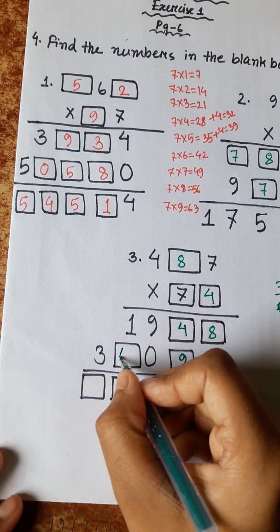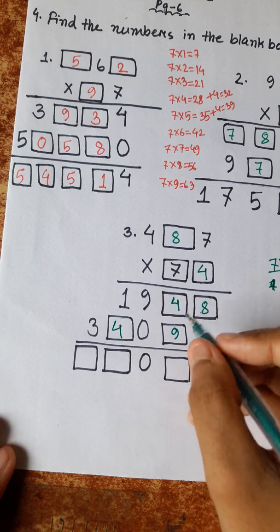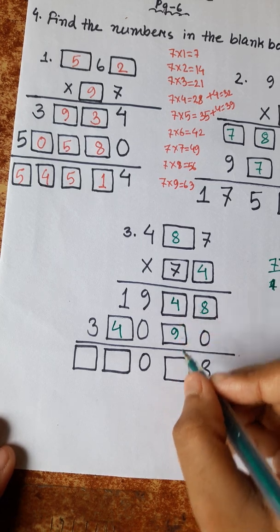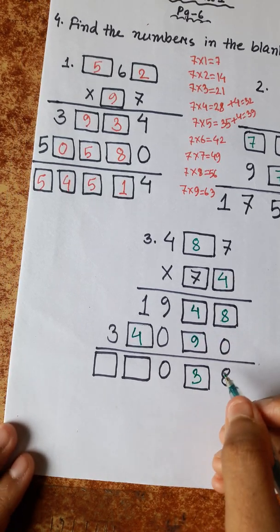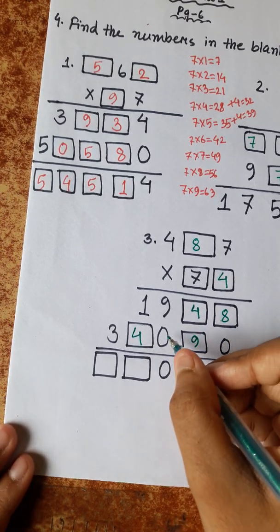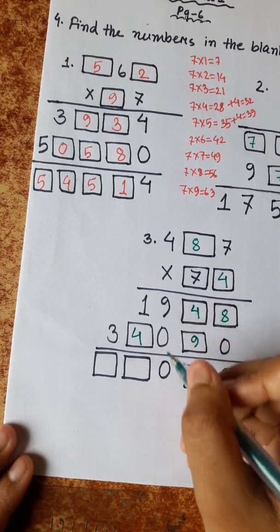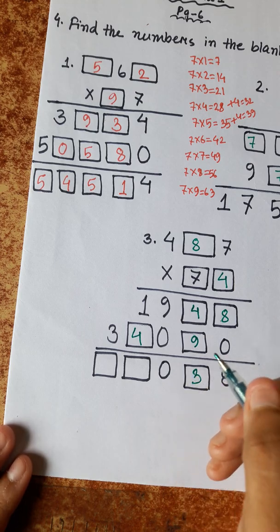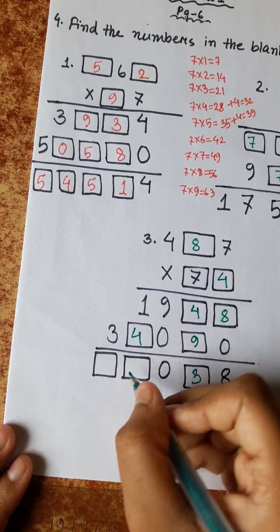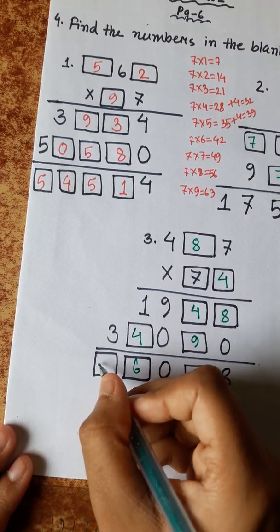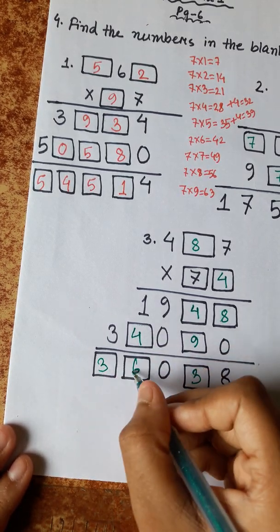34. 9 plus 4 is 13, carry 1. 9 plus 1 is 10, 0 carry 1. 4 plus 1 is 5, plus 1 is 6, and 3.